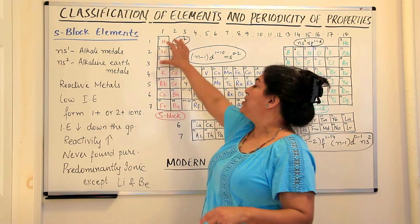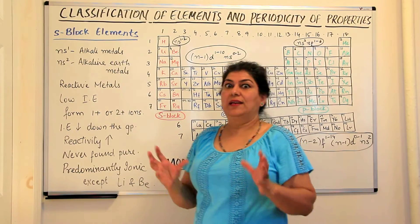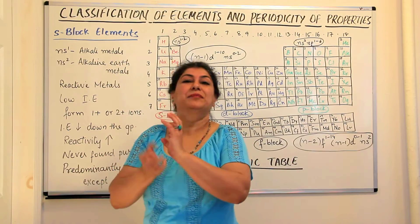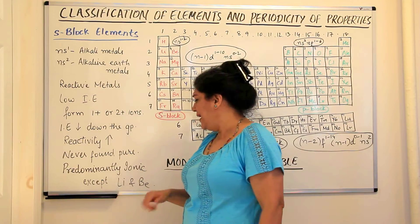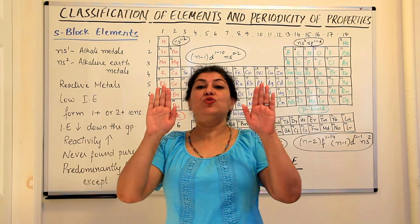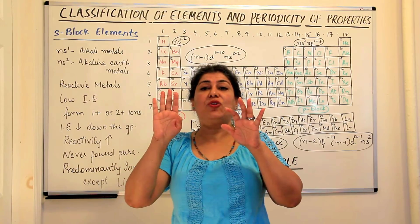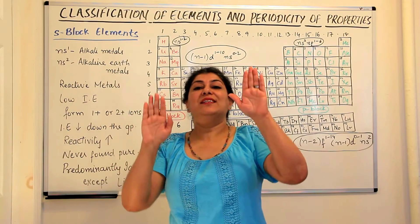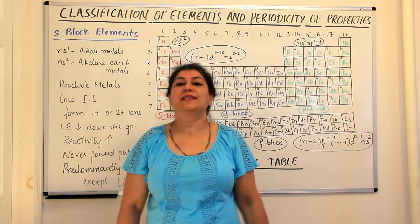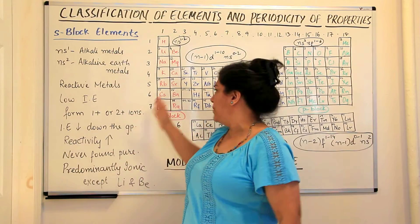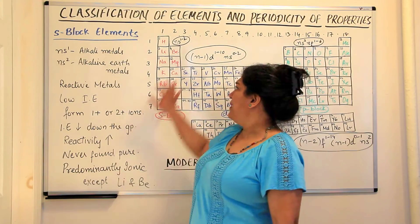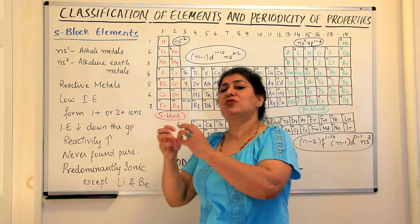Due to this high reactivity of the alkali and alkaline earth metals, they are never found free in nature — they are never found in their native state like gold or noble gases. They are always found in compound form, combined with other elements. The compounds they make are predominantly ionic: one atom loses electrons and another atom or group of atoms gains those electrons, and the two stay together because of electrostatic forces of attraction.